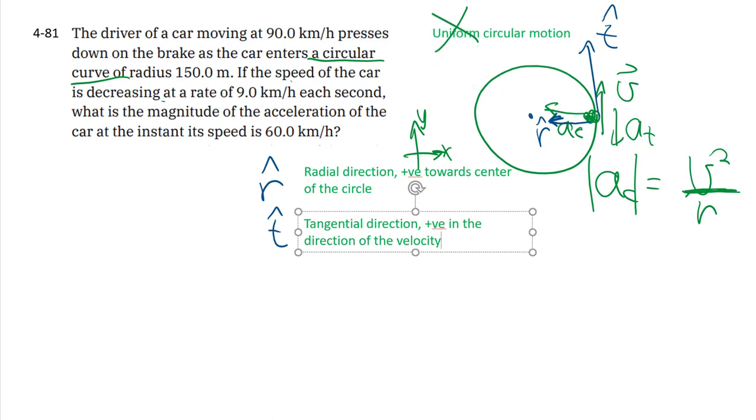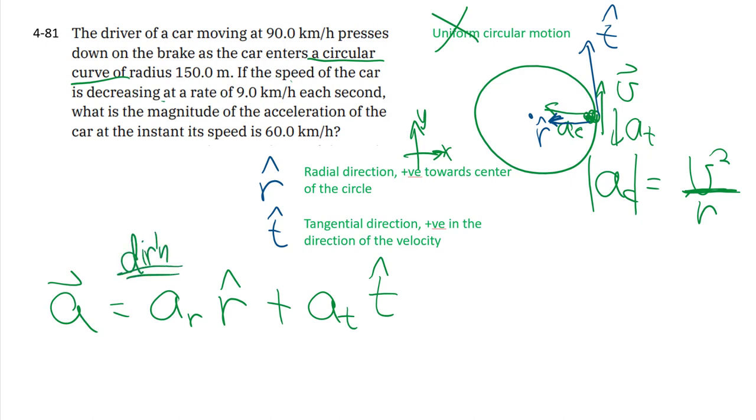Breaking it down this way, it's a lot more convenient because now your total acceleration vector is going to have a radial component in the r-hat direction plus some tangential component in the t-hat direction. The radial component is exclusively responsible for changing the direction of your particle.